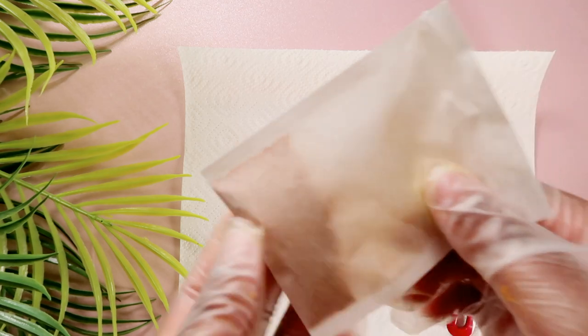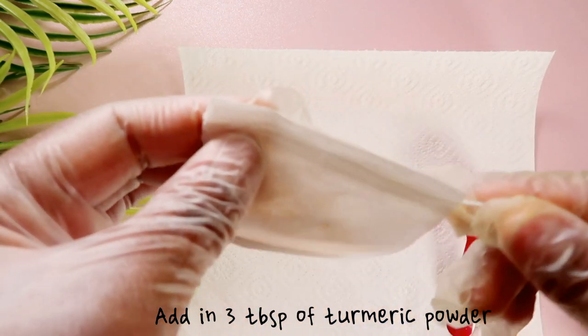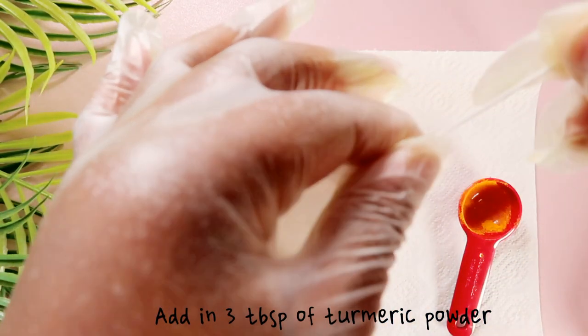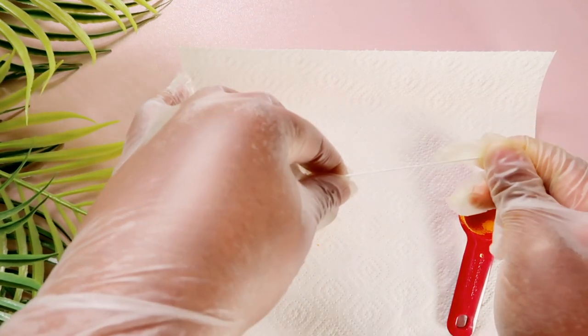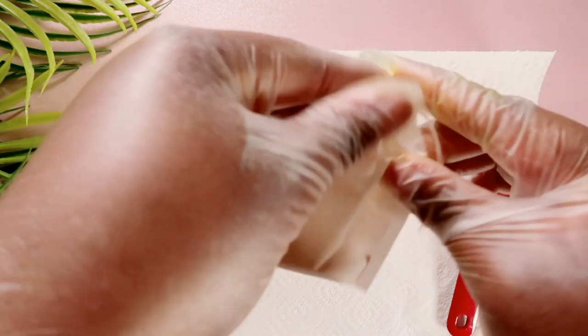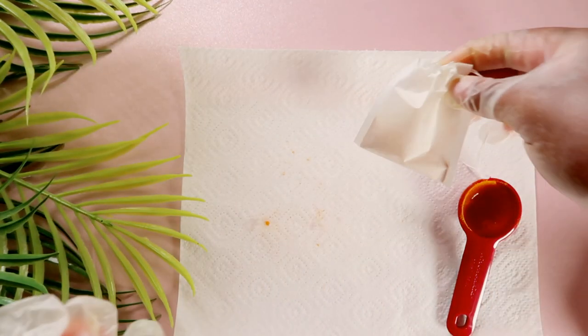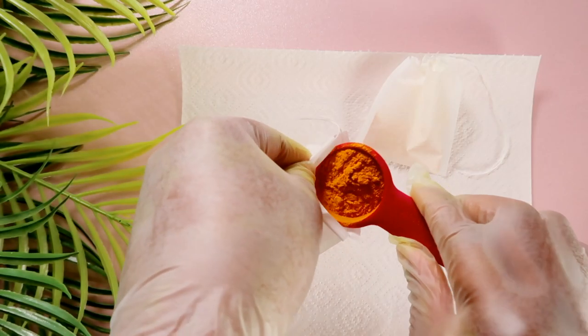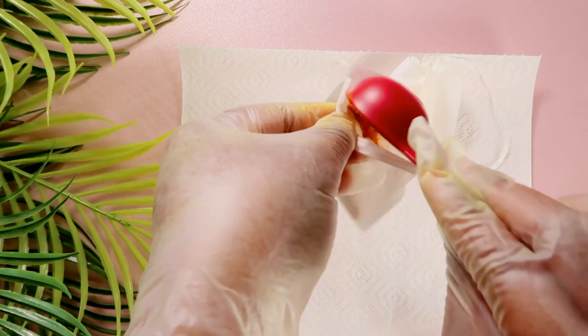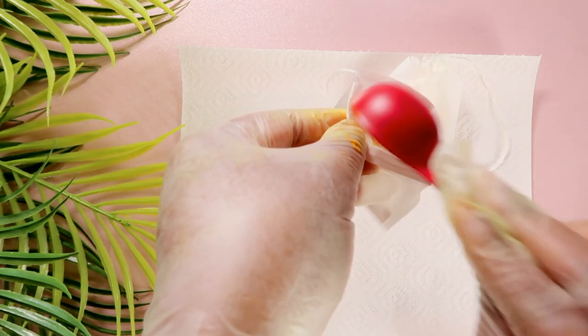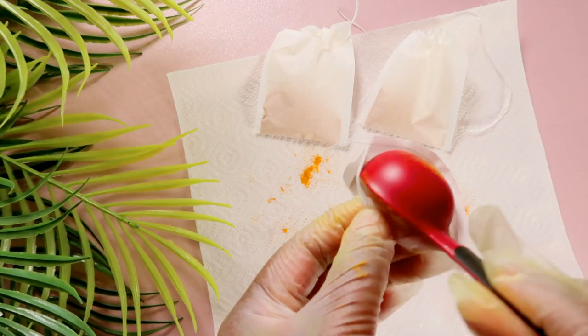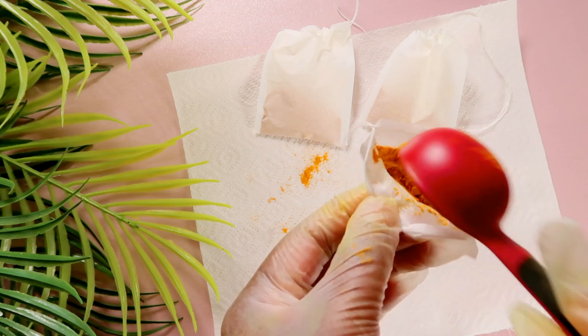I'm going to add three tablespoons of turmeric into the empty tea bags. You can adjust as you want. I used three tea bags and I'm adding a tablespoon each of turmeric powder into three tea bags. Make sure to protect your hands because turmeric stains.